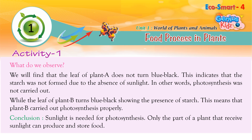This indicates that starch was not formed due to the absence of sunlight — in other words, photosynthesis was not carried out. While the leaf of Plant B turns blue-black, showing the presence of starch. This means that Plant B carried out photosynthesis properly. Conclusion: sunlight is needed for photosynthesis. Only the part of a plant that receives sunlight can produce and store food.